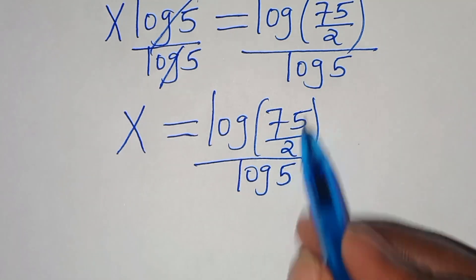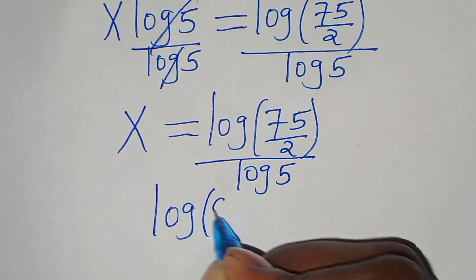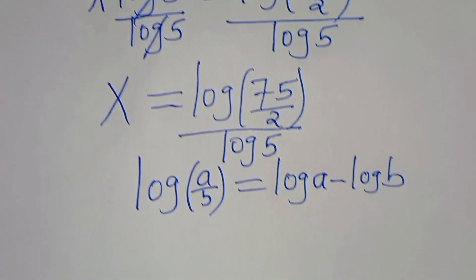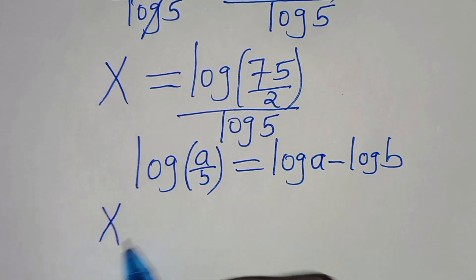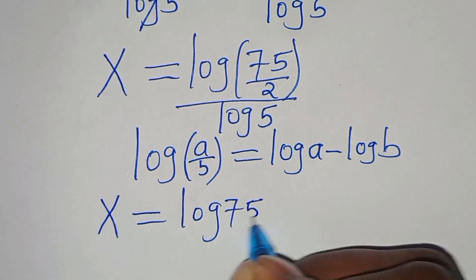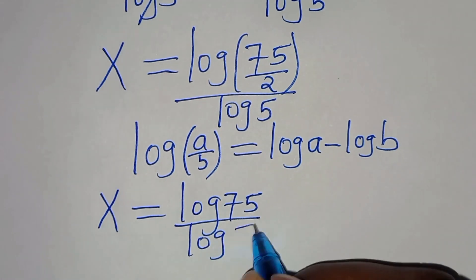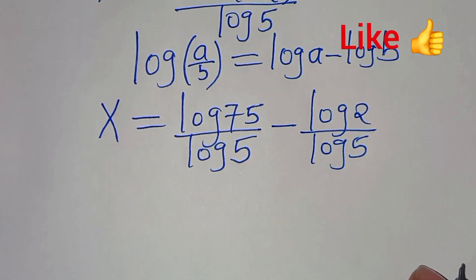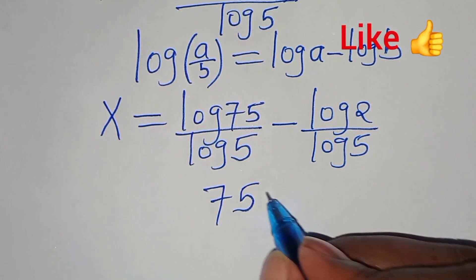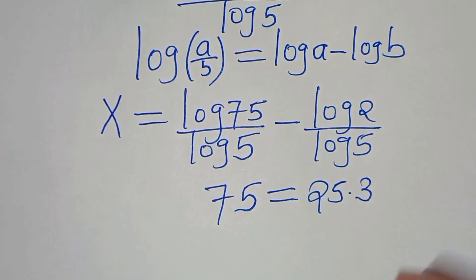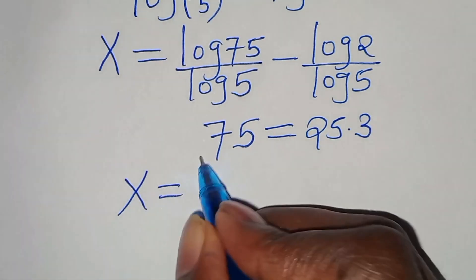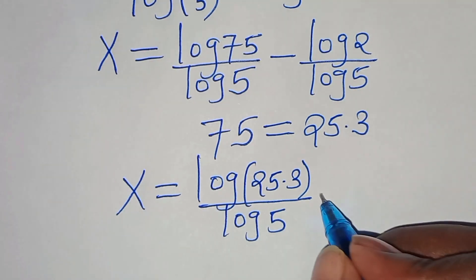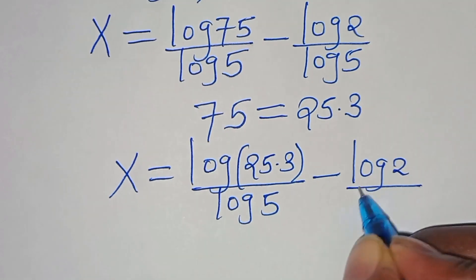The next step: log(75/2) is in the form log(a/b), which we can express as log(a) minus log(b). Applying this log property, x equals log(75) divided by log(5) minus log(2) divided by log(5). We can express 75 as 25 multiplied by 3, so x equals log(25×3) divided by log(5), minus log(2) divided by log(5).